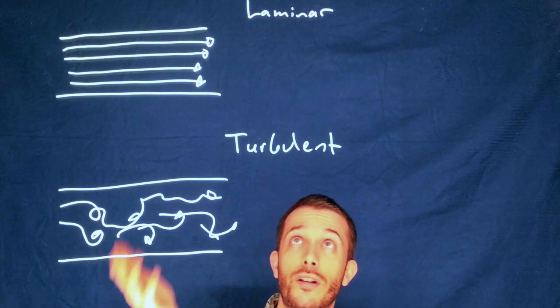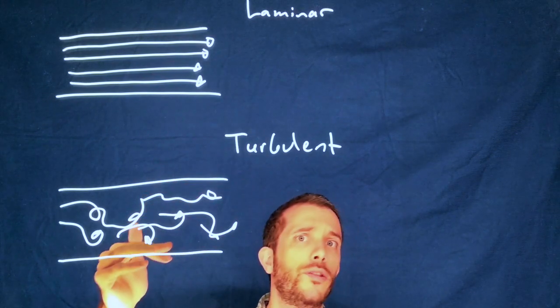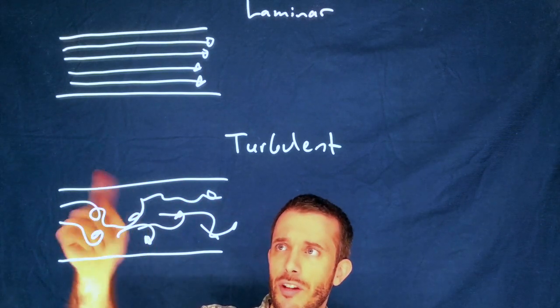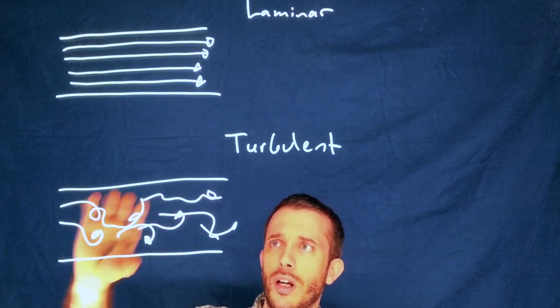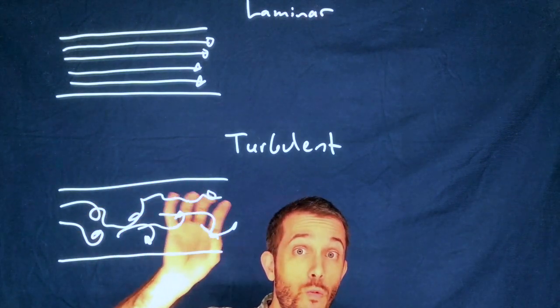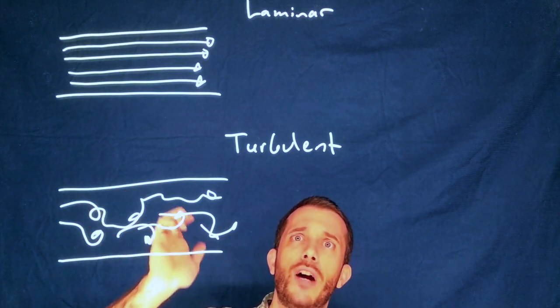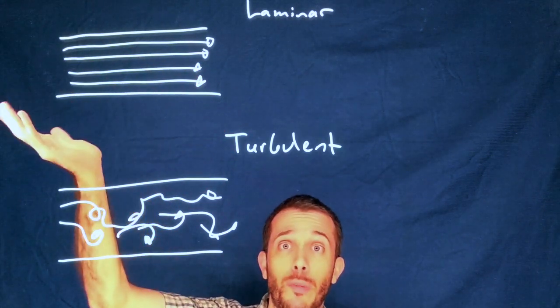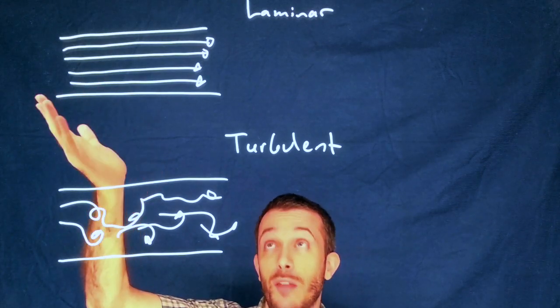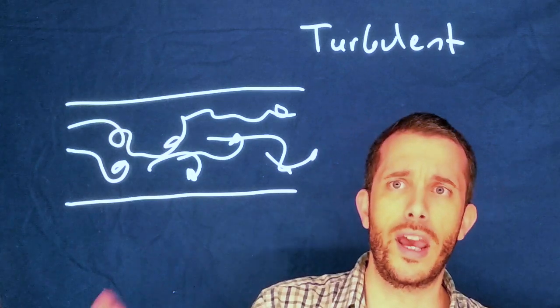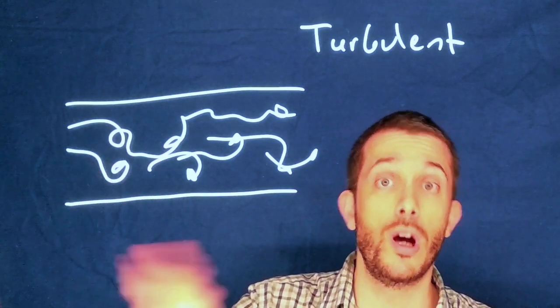Now, depending on the application, you might want laminar, you might want turbulent. If you want your fluids to mix or, for example, in a heat exchanger, you want the heat to be easily transferred to the outside of the pipe, then you maybe want turbulent. If however, you want to have easy calculations or not have turbulence as in the case of an airplane wing, then you want laminar. So how do you know ahead of time which type of flow you're going to get?